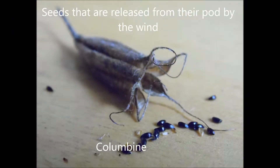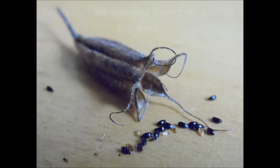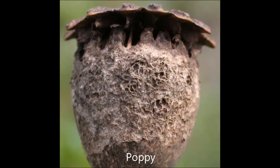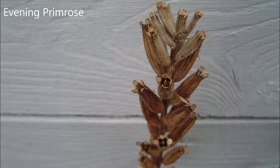Seeds that are released from their pod by the wind. Many plants just need the wind to bend their stalks so that the seeds spill out of the seed pod. Some seed pods face downwards but very many of them have their opening at the top, and these need the wind to bend their stalks enough to allow the seeds to fall out. This often means the seeds will not fall directly under the parent plant because the stalk holding the seed pod is bent at an angle. Some seeds dispersed by this method are Columbine, Poppy, and Evening Primrose.